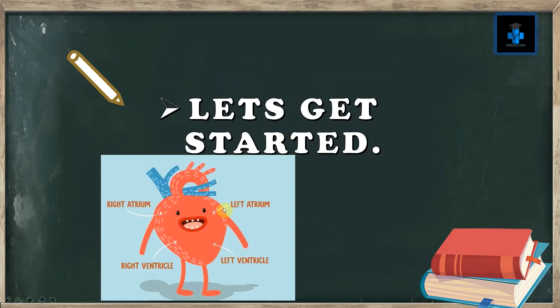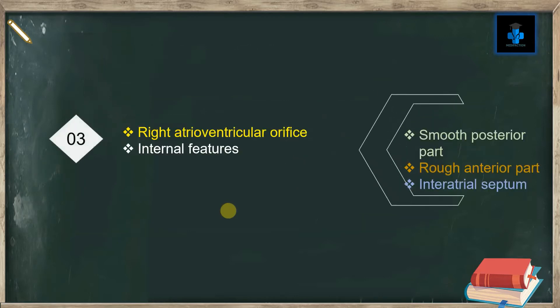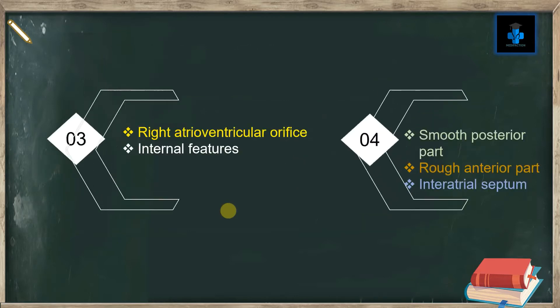In this video I will be covering an introduction about the right atrium, its external features, tributaries of the right atrium, the right atrioventricular orifice, and internal features which comprise the smooth posterior part, rough anterior part, and the interatrial septum.